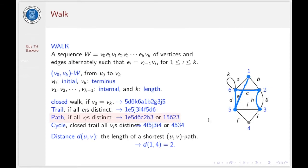W is called a path if all vertices are distinct. This is one of the examples, a path from 1 to 3, so we go this way, and we have all vertices different, distinct.